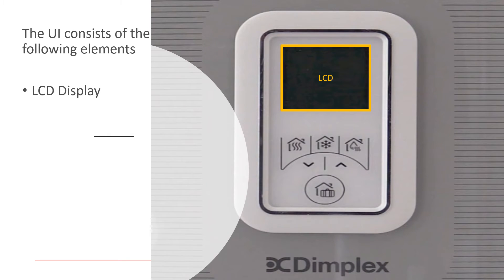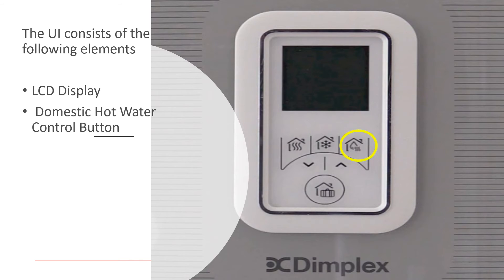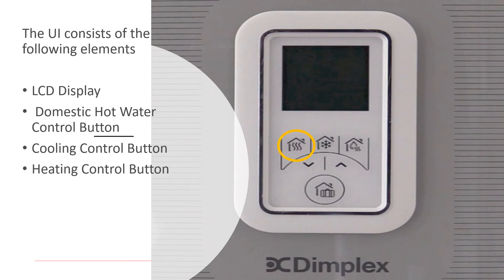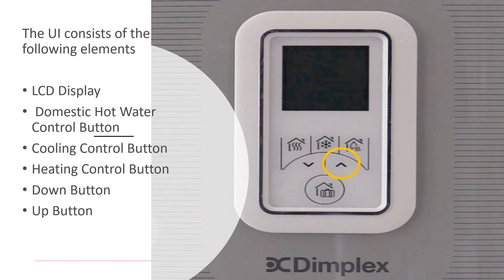The user interface consists of the following elements: LCD display, domestic hot water control button, cooling control button, heating control button, down button, up button, and home button.